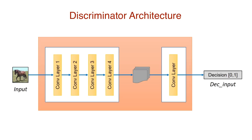The discriminator is a simple architecture. It takes an image input and outputs the probability of whether it is part of the real dataset or the fake-generated image dataset. This architecture is a patch GAN — it involves chopping an image input into 70x70 overlapping patches, running a regular discriminator over each patch, and averaging the results to determine overall whether the image is real or fake. We can implement it as a fully convolutional network where the final convolution layer outputs a single value.